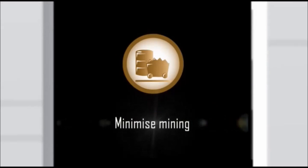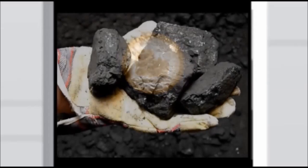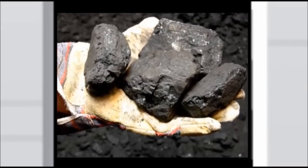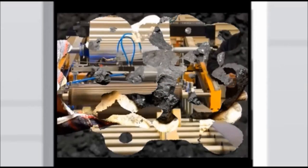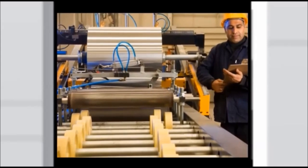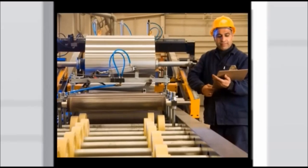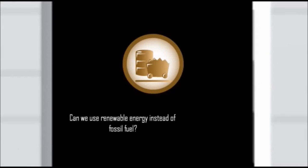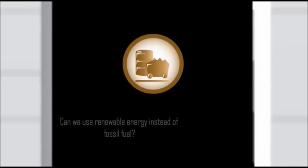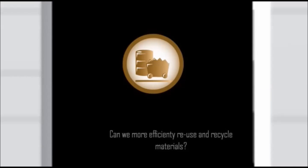The first one means we should mine only what can be used without polluting nature. That doesn't mean we need to stop mining — we can't build wind turbines without steel — but we need to be smarter with what we mine and how we manage mined materials, especially the toxic ones. This sustainability condition prompts questions like: can we use renewable energy instead of fossil fuel? And can we more efficiently reuse and recycle materials?